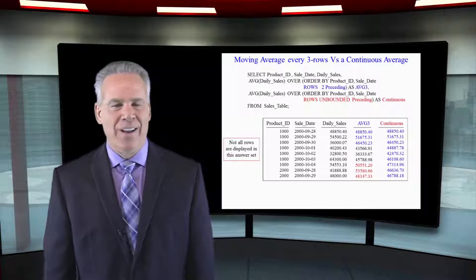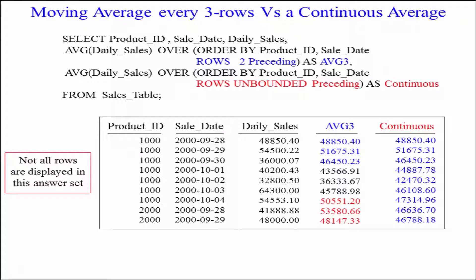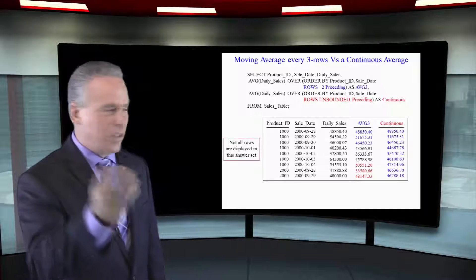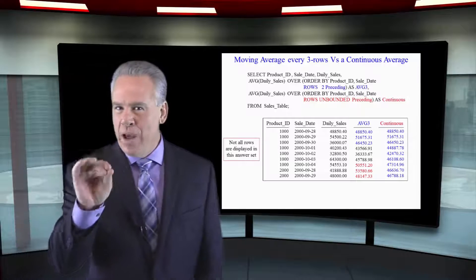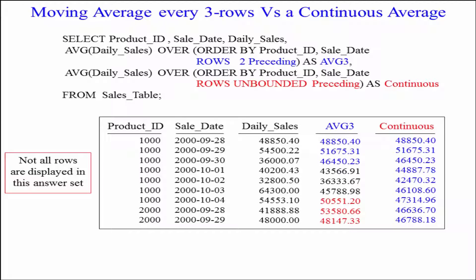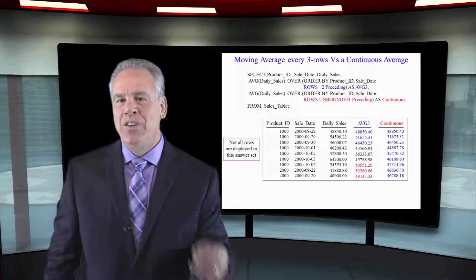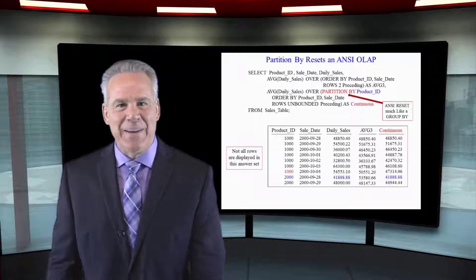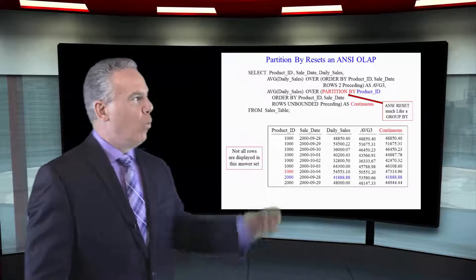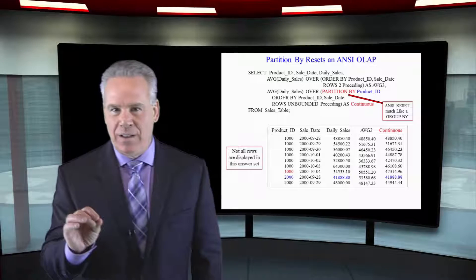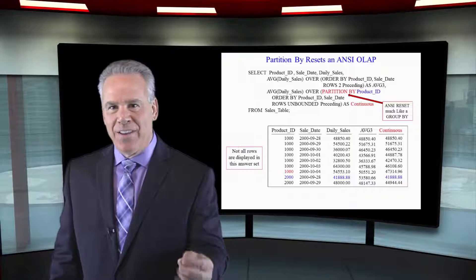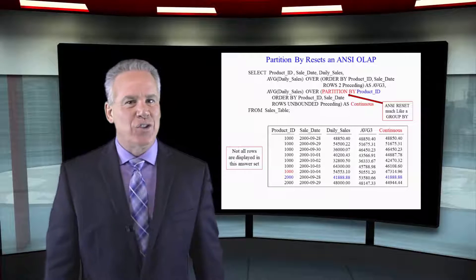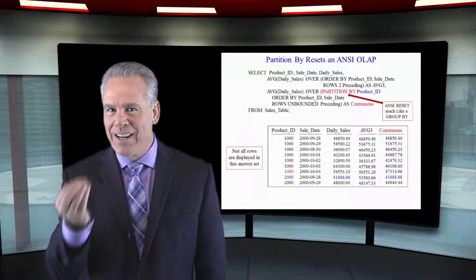I have two moving averages here. One of them uses rows 2 preceding; the other uses rows unbounded preceding. Rows 2 preceding gives us a moving average every three rows. The continuous example with rows unbounded preceding will start with row one and continue to average with each and every row till we get to the end. And notice that beautiful partition by statement — in the rows unbounded preceding version, we have partition by product ID, so things will reset with each product ID break.